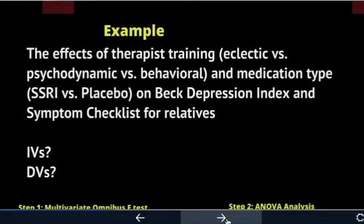For an example, if you're looking at the effects of therapist training — whether they receive eclectic clinical training, psychodynamic training, or behavioral training — the independent variable is training with three levels. And then the type of medication the client received, whether an SSRI or a placebo, gives you two levels.